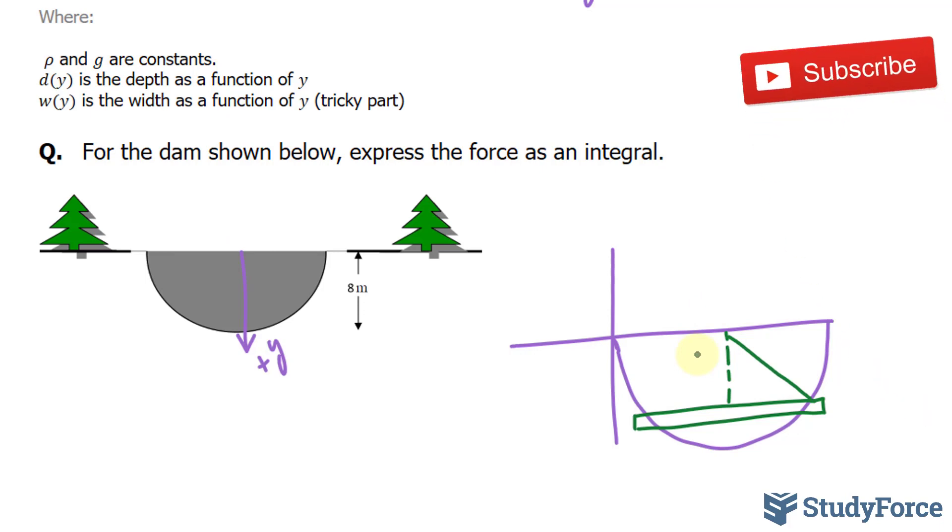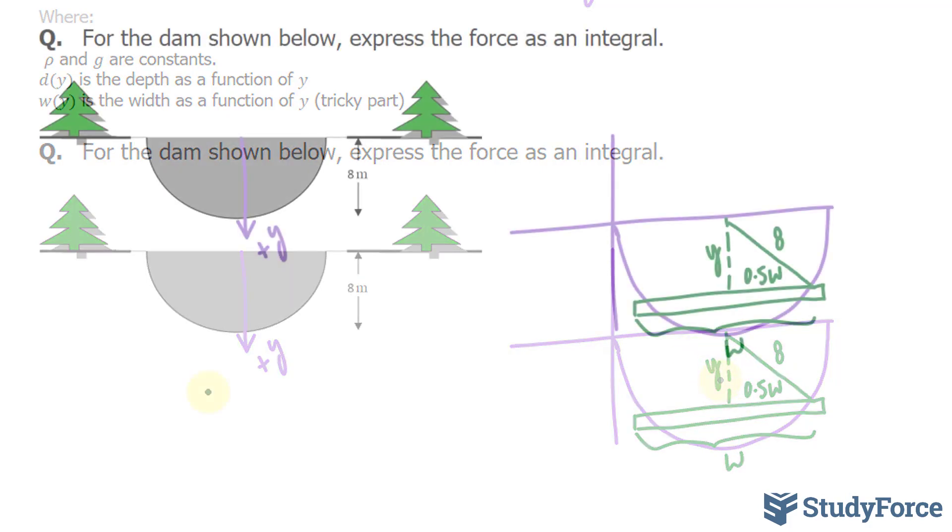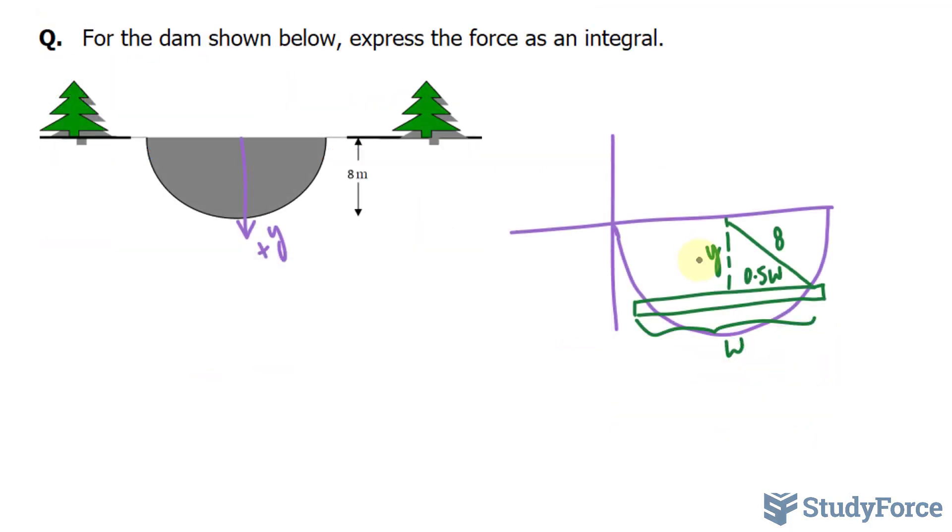So the radius has to be 8 meters. If the radius is 8 meters, then the length from here to here is also 8 meters. So I'm going to call this 8, and this from here to here is w. Half of that is 0.5w, and the distance from here to here we'll just call y. Let's go ahead and use the Pythagorean theorem to relate these three sides.